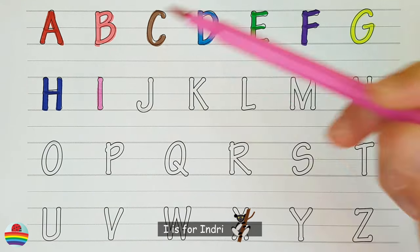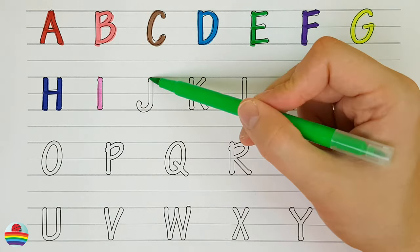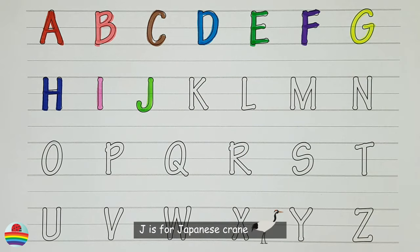I. I is for injury. I. J. J is for Japanese crane. J.